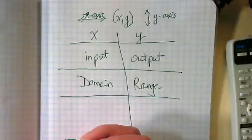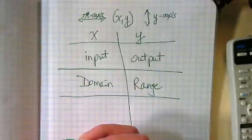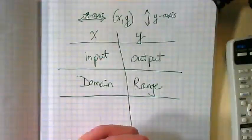If they mention range, they mean y. They mean output. If you see domain, they're talking input or x.